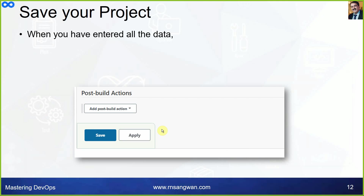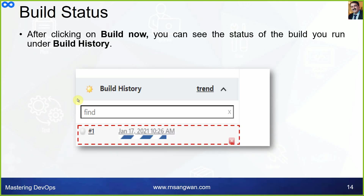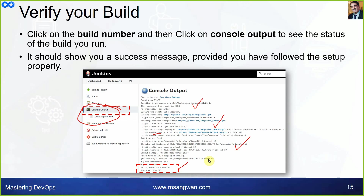Save your project by clicking Apply and Save. After that, click Build Now. You can check the build status on the right-hand side, and by clicking on the build number or link you can view the build history. Click on Console Output to see exactly what is happening during the build. At the end you will see a success message if you followed the steps correctly.